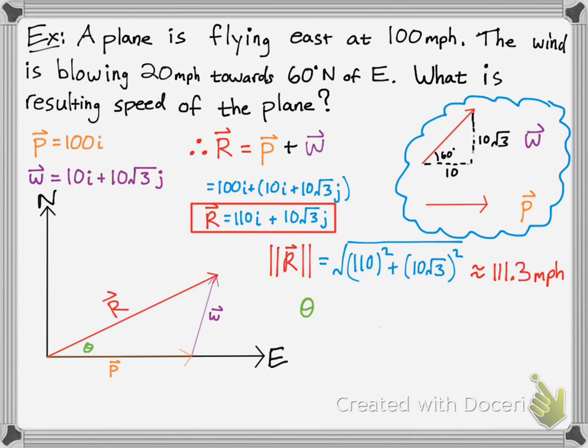For the theta, if you want to know what angle you're flying at, you can use your knowledge of trigonometry and know that tangent is opposite over adjacent to get that angle. You would take the inverse tangent of your opposite, which is 10 radical 3, over your P vector, which is 110.